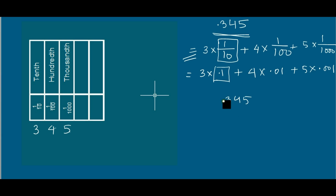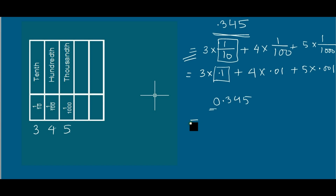Whenever you place a decimal before a number, you place a zero just to distinguish that there is no whole part. A zero is kept before the decimal number. Why? If you write 0.345 and the decimal point is not clearly visible, someone might by mistake read it as 345, as a whole number. That's why you keep the zero.